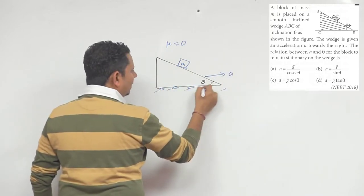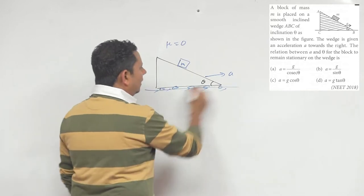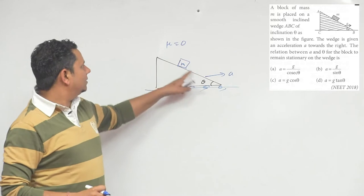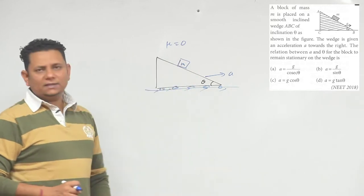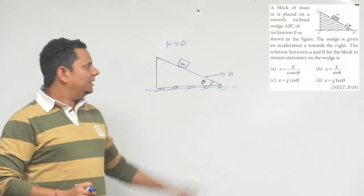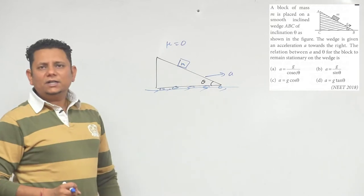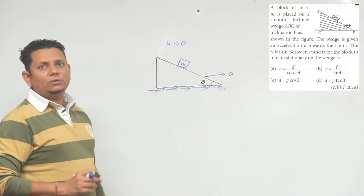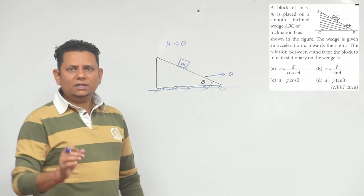We have a block with acceleration in this direction, such that it stays stationary with respect to the inclined plane, not with respect to ground. This is stationary with respect to the wedge.